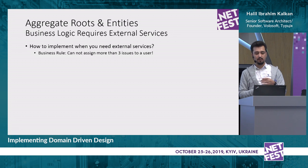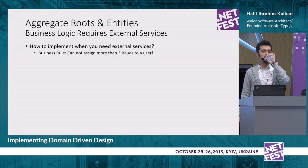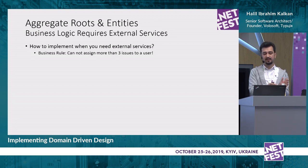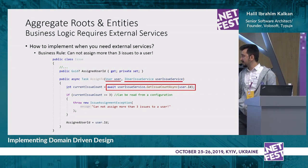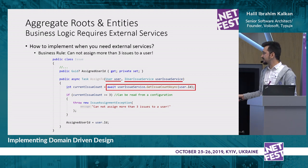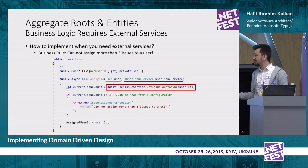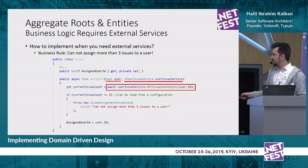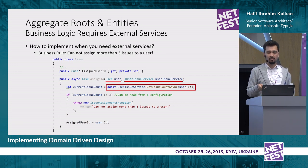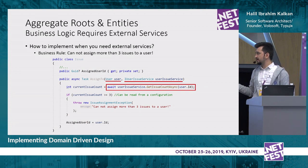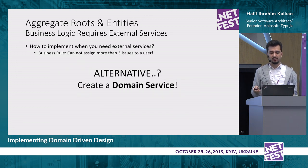How do you implement a rule when you need an external service? Assume a business rule says we cannot assign more than three issues to a user concurrently. I created an AssignTo method with a private assignedUserId setter — forcing use of AssignTo always. It gets a user entity rather than a GUID, because a GUID can be anything, while a user object is guaranteed. I also pass an external service that queries issue count for a user and throws an exception based on that. However, this implementation is a problem because it makes our entity depend on external services. An alternative is to move this to a domain service.